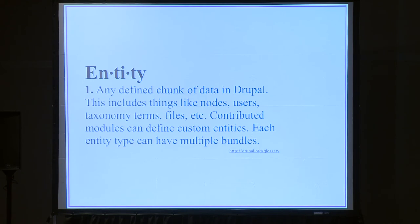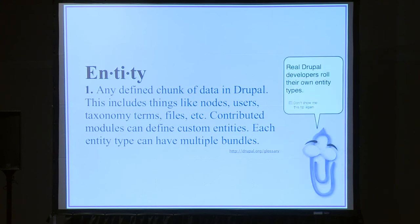Entities can be a confusing name in Drupal 7. Entity types include node, user, taxonomy term, and file — an entity is a single instance like a single node or a single user. People often mix up 'entity' and 'entity type.' It's important not to be afraid to create your own entity if you're building something that doesn't fit into any existing entity type — instead of making a content type for something that is nothing like a content type, you can actually make your own entity.